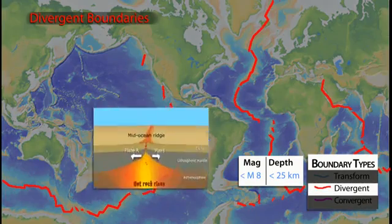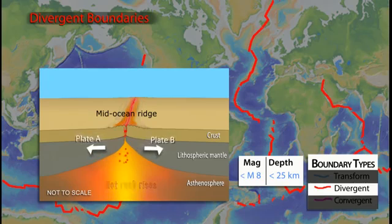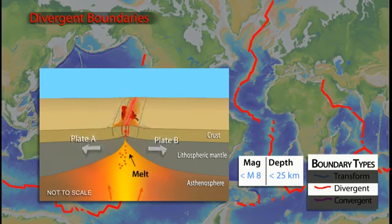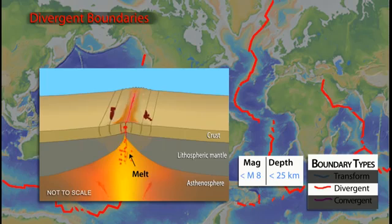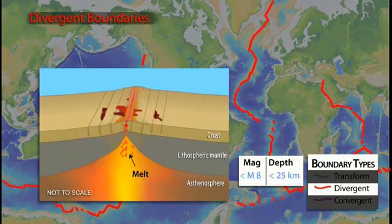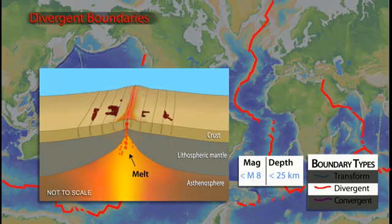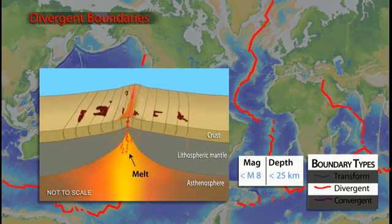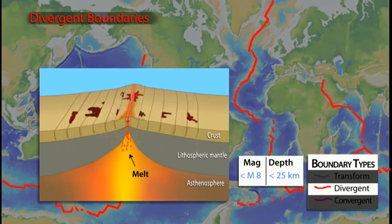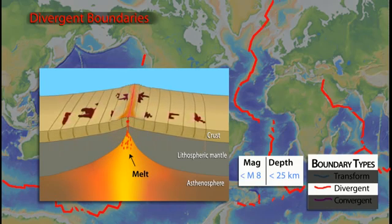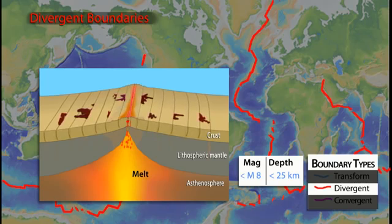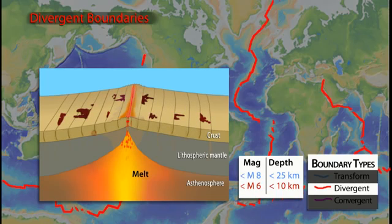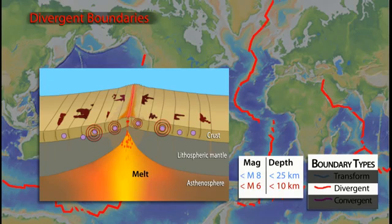At divergent boundaries, oceanic crust forms at spreading ridges where plates pull away from each other. A small volume of the mantle melts to create the crust. The hot, buoyant, upwelling mantle supports the oceanic ridges that form the Earth's longest mountain system. Because temperature increases rapidly with depth at divergent boundaries, there is only a thin layer of brittle rock to fracture in earthquakes. Most earthquakes occur within the upper 10 kilometers and have magnitudes that are generally less than 6.